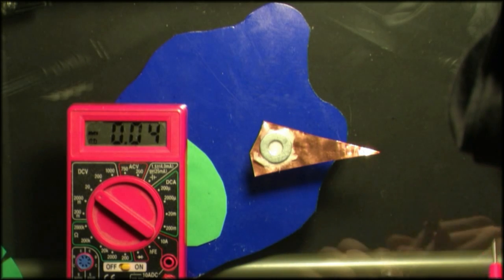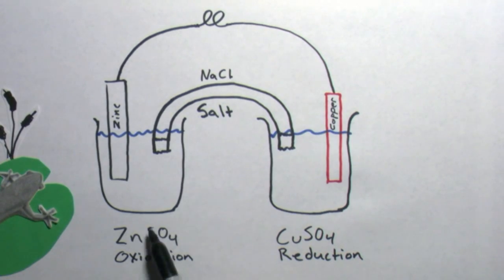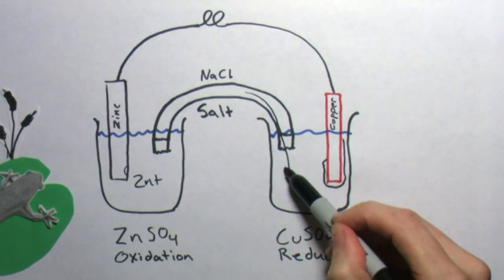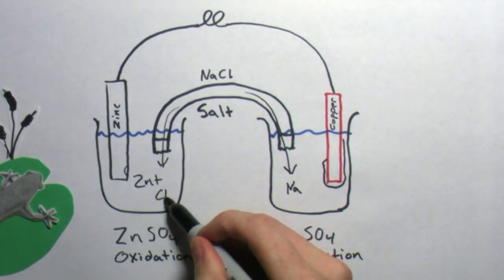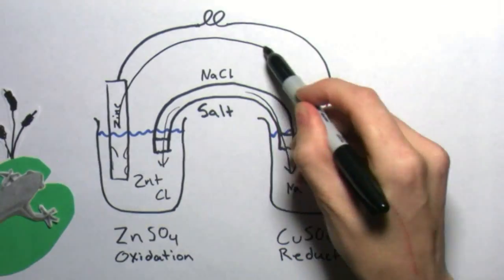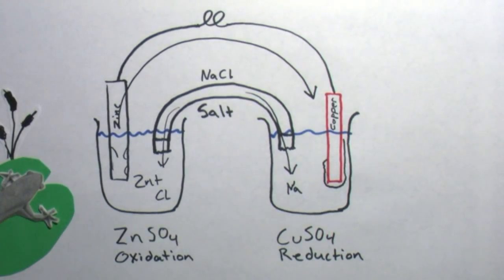Cells like this have a disadvantage because they continue to react even when current isn't flowing. An improved cell would have electrodes surrounded by a solution that only reacts when current is flowing. This can be achieved by using a salt bridge with a permeable membrane that allows ions to pass.